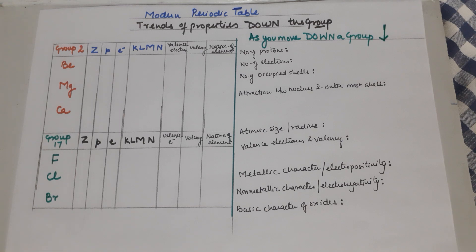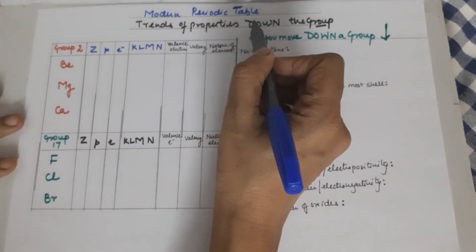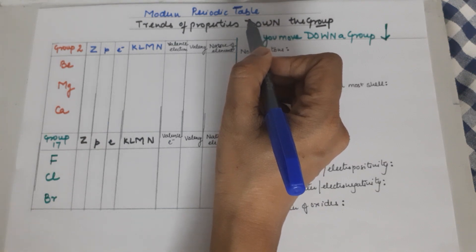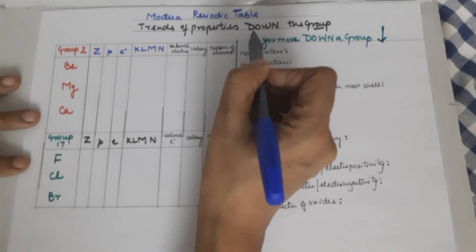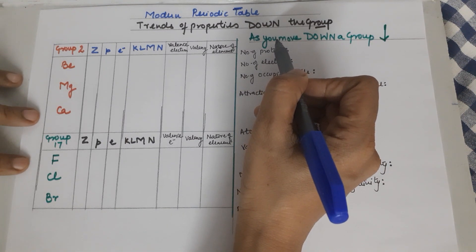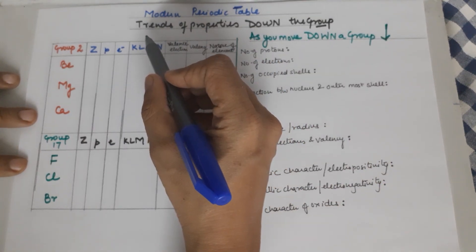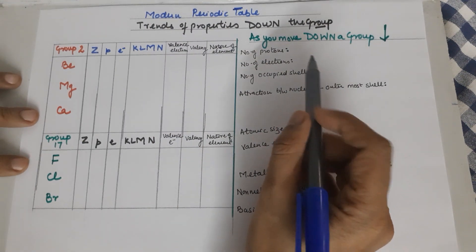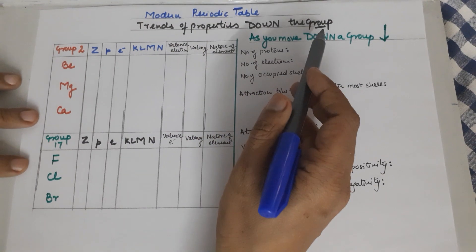Good afternoon students, welcome to the channel. For Class 10 students, we are going to do the topic of the day: trends of properties as you move down the group in the modern periodic table. This is the most important section of this chapter, Unit 5, CBSE Class 10. You can also find my playlist on periodic classification of elements, including videos on how to learn the periodic table, how to place elements, Newlands, Dobereiner's Triads, and a comparative study of the modern versus Mendeleev's periodic table, as well as trends of properties across a period from left to right.